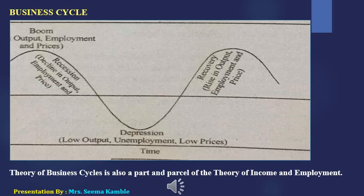The economy is not permanently in depression. It begins to recover. Slowly the economy moves back toward recovery and then boom again. So the cycle continues: boom, recession, depression, recovery, and boom again. Why are there these ups and downs in the economy? What are the reasons behind them? We study all these factors in macroeconomics under the theory of income and employment.